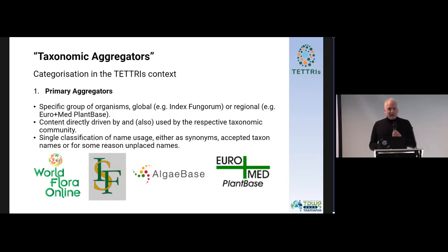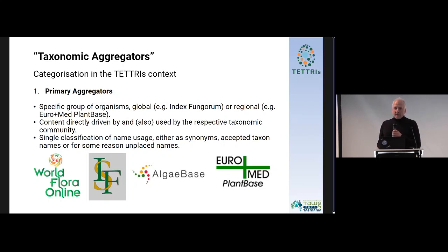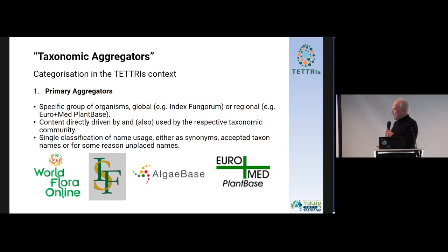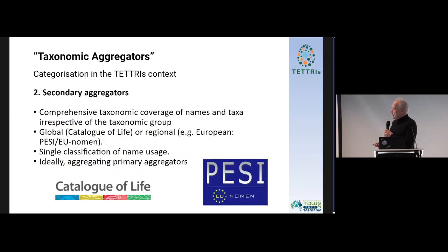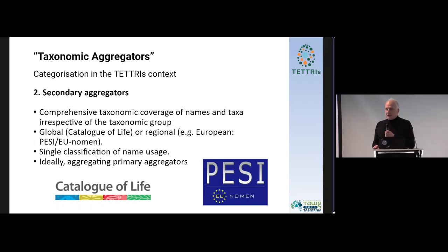For the taxonomic aggregators, I've gone a bit further in the classification effort. I actually formulated three categories. One is the primary aggregator, which is something really respected by the community, or done by the community — ideally both. It specializes on a certain taxonomic group, because communities are usually taxonomically defined in that way, and it uses and provides a single classification. The second category are the secondary aggregators that actually cover all taxa, also give a single classification, and ideally aggregate primary aggregators.